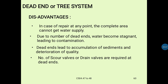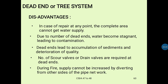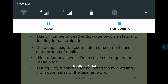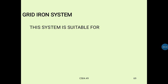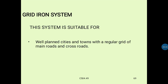A number of sluice valves and drain valves are required at dead ends. During fire, water supply cannot be increased by diverting from other sides of the pipe network. This is the disadvantage of the dead end or tree system.